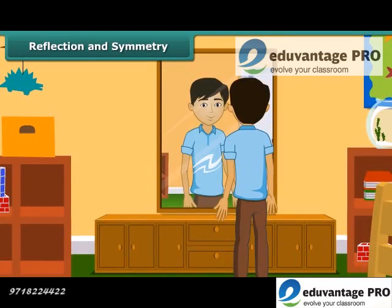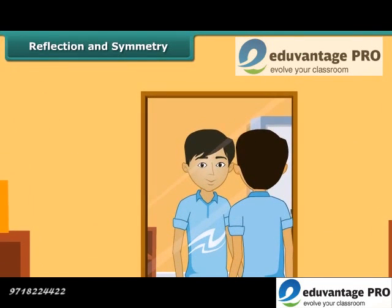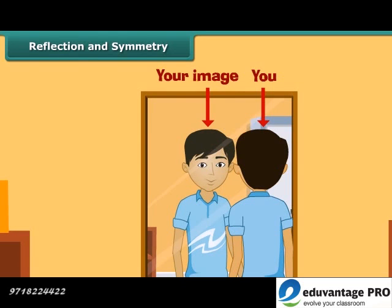Students, you must have noticed that when you see yourself in front of a mirror, you and your image are identical. The image is the reflection of the object in the same line. Notice that there is no change in the lengths and angles. However, in the image, the left portion of the object becomes right, whereas the right part of the object turns left part in the image.